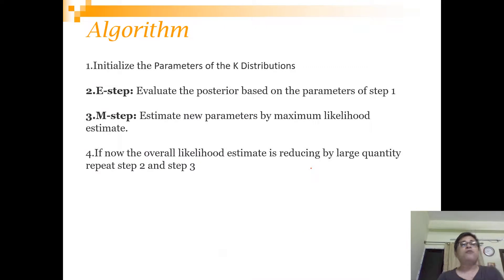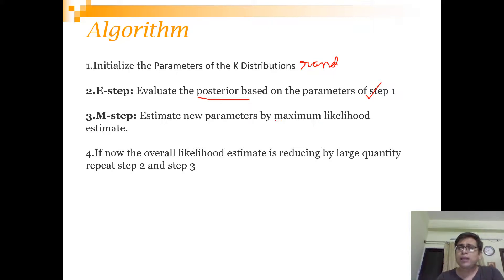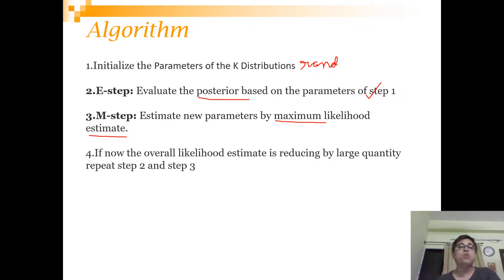Let's look at the formal algorithm. First, we initialize the parameters of the K distributions randomly. Then there is the E step — evaluate the posterior, which is the likelihood or responsibility function based on the current parameters. In the M step, we estimate new parameters by maximum likelihood estimation. The formulas we saw for sigma squared and mu are the calculations done in the M step. We continue until the algorithm converges.